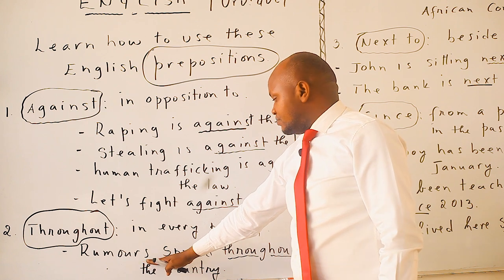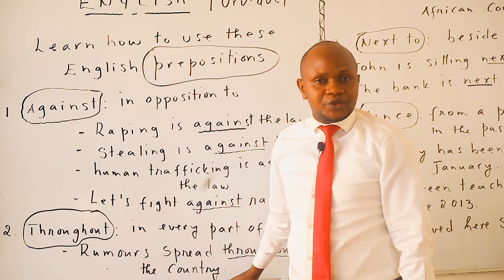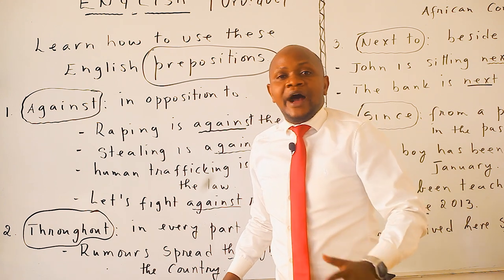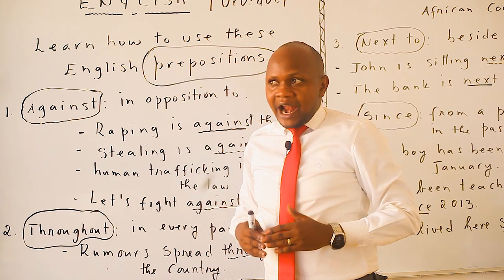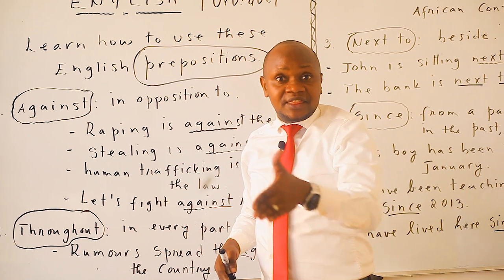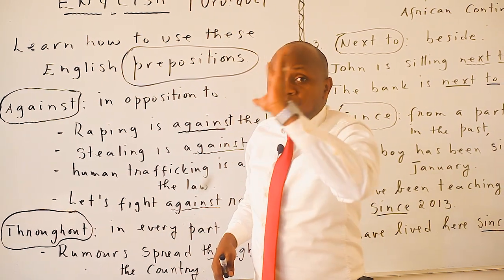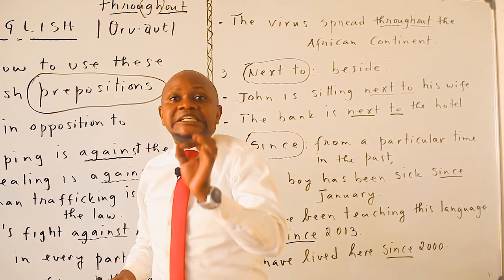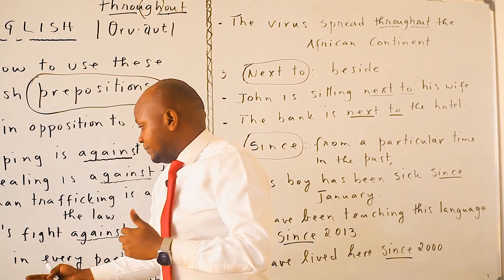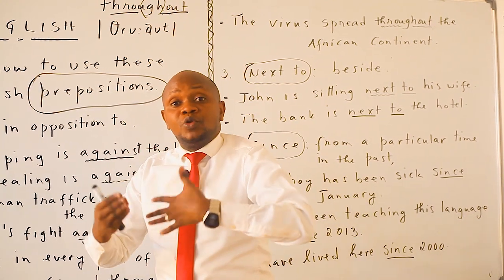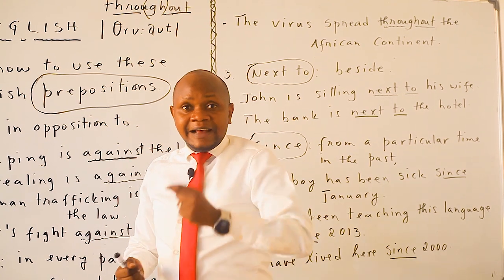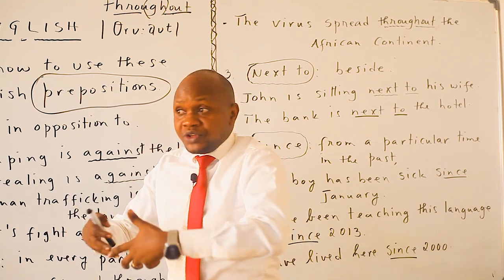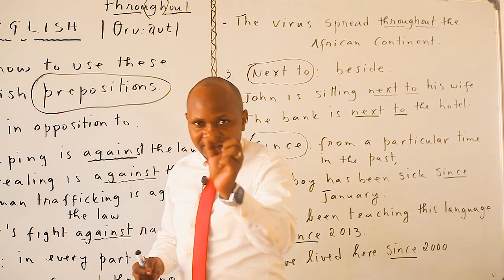For example, you can say: 'Rumors spread throughout the country.' Last year, rumors spread throughout the country. Yesterday, these rumors spread throughout the country. You can also say: 'The virus spread throughout the African continent.' That is how we use 'throughout.'